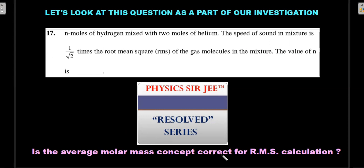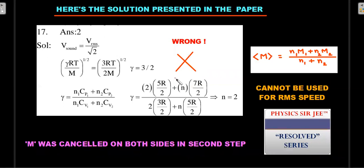I'll provide you the solution given in the question paper. Is the average molecular mass concept right for the RMS calculation is what we're going to look at. This is the solution given by the examiner. The relation v sound equals v rms by root 2 has been substituted with root gamma RT by m for the velocity of sound, which is very familiar to the students. Gamma is the gamma of the mixture, and v rms has been substituted as root 3RT by capital M. The first thing that you notice is that the examiner has cancelled the value of capital M on both sides and thereby ended up getting a gamma value of 3 by 2.